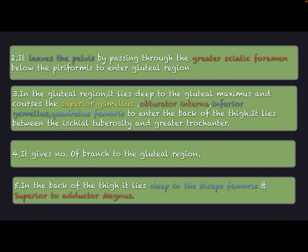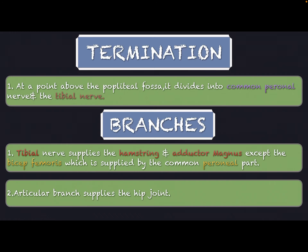In the back of the thigh, it lies deep to the biceps femoris and superficial to the adductor magnus. At a point above the popliteal fossa, it divides into the common peroneal nerve and the tibial nerve.